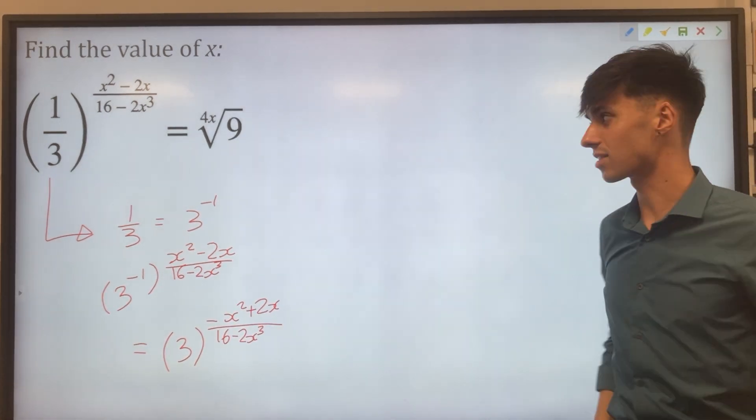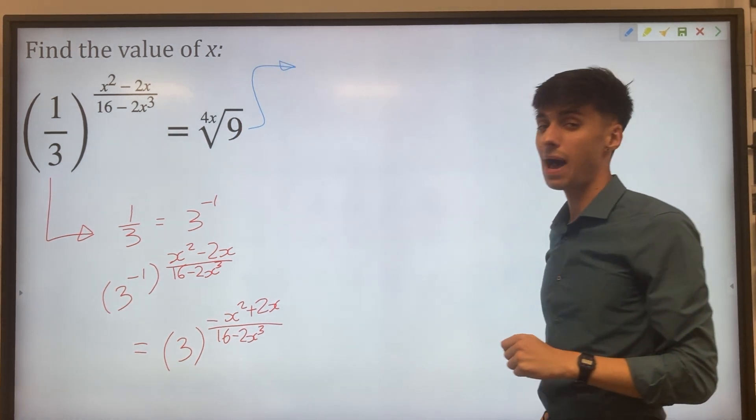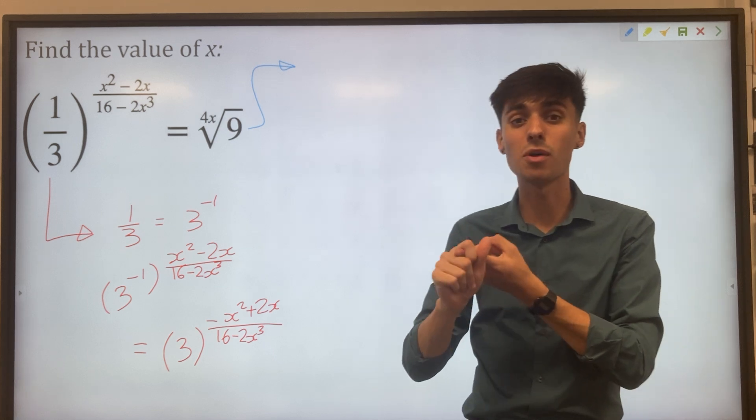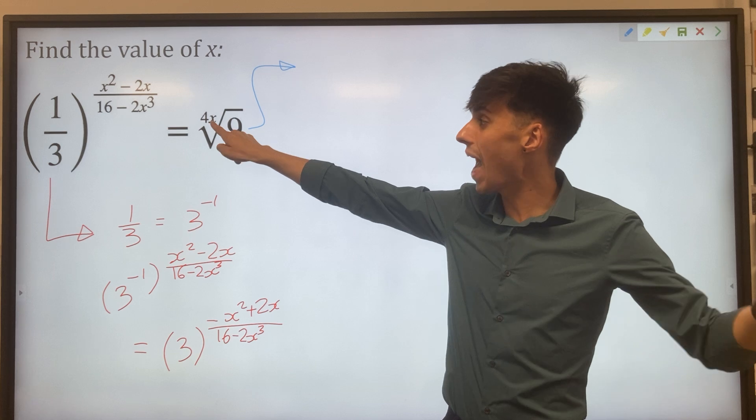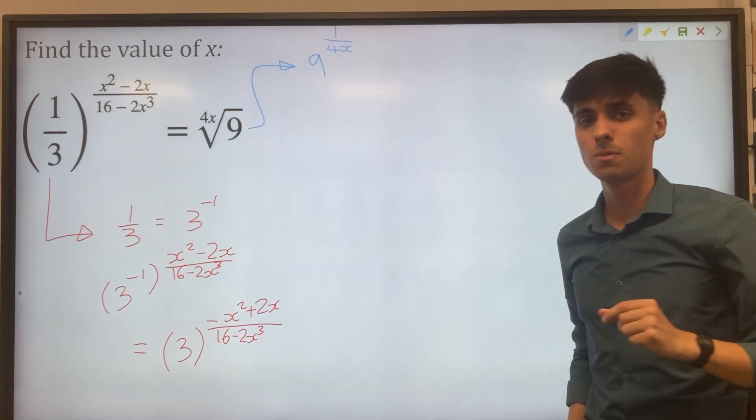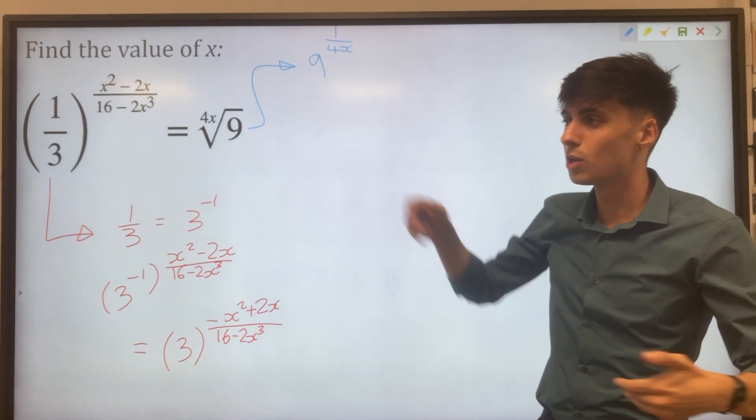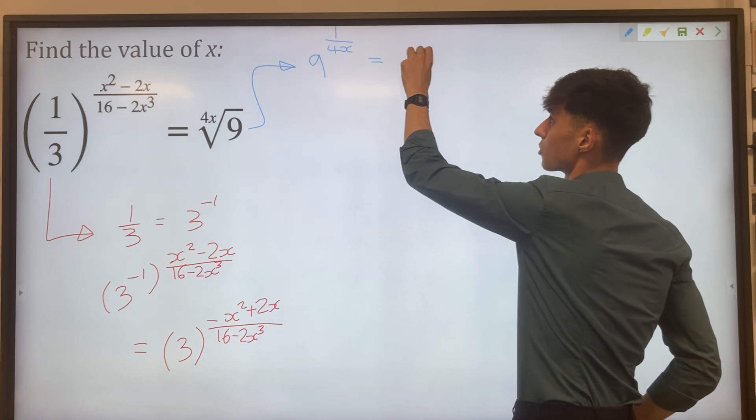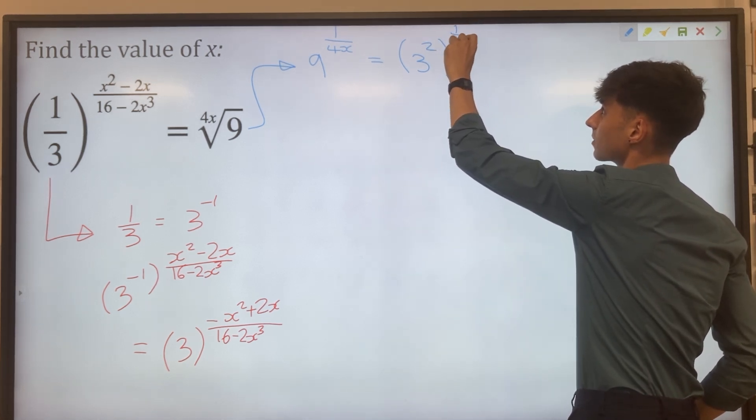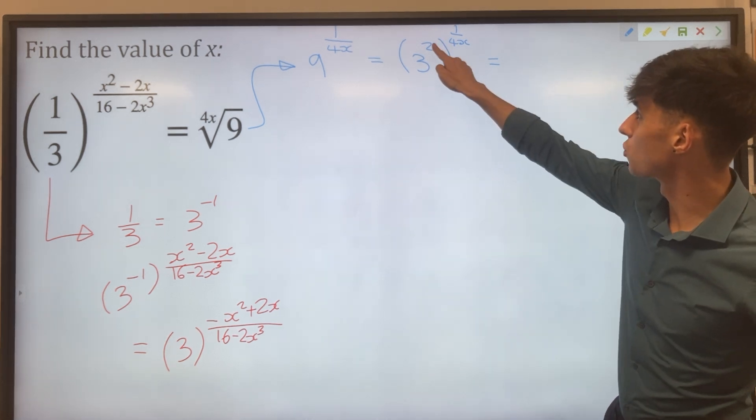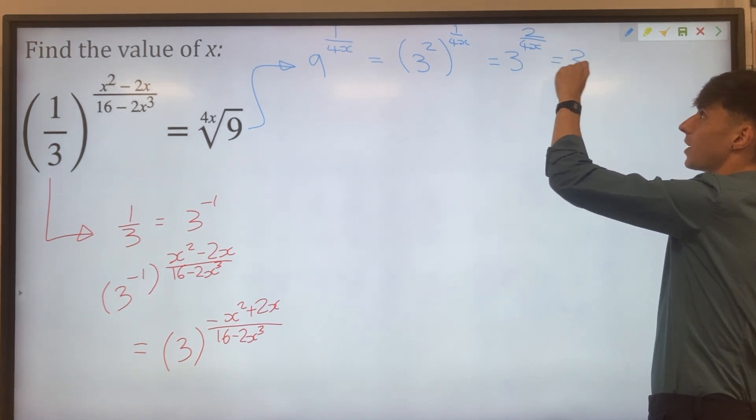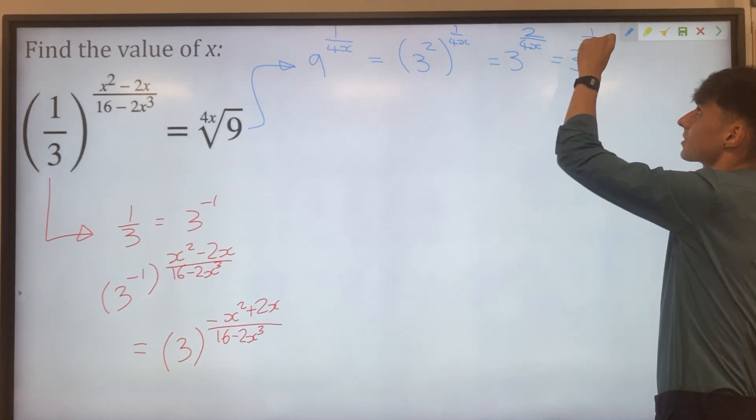Let's do a similar thing with the right hand side. So we'd also like to make it a power of 3. First we need to think about what this root sign means. Well if you have a square root that means power of a half. The cube root means power of a third. So a 4xth root will be 9 to the power of 1 over 4x. Now we'd like to make this 9 into a 3 somehow. So we use a similar kind of relationship. Well 9 is just 3 squared. So that means we've got 3 squared to the power of 1 over 4x. And again power over power means you multiply these two together. So we've got 3 to the power of 2 over 4x, which will simplify to 3 to the power of 1 over 2x.